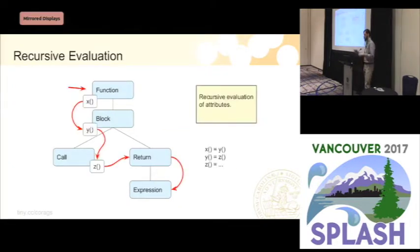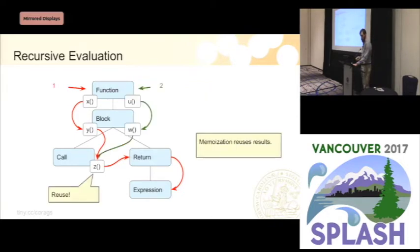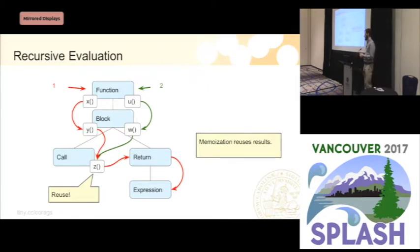We use recursive evaluation where you take the expression for the attribute and evaluate it, which can use other attributes, requiring those to be computed as well. This is illustrated by a small attribute system where attribute X uses attribute Y — we go all the way down the call chain. We use memoization so if another attribute uses one that has already been computed, we don't have to recompute it. For example, we can reuse the value of Z, computing it only once.